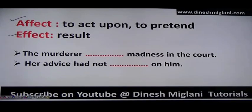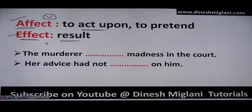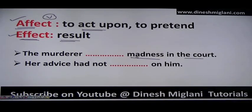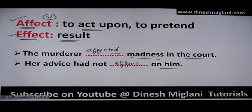The second pair is 'affect' and 'effect.' Affect means to act upon — it is basically a verb. Effect is the result of something — if someone has done work, the outcome is the effect. For example: 'The murder affected madness in the court' uses 'affected' as a verb. 'Her advice had no effect on him' uses 'effect' as a noun showing result.